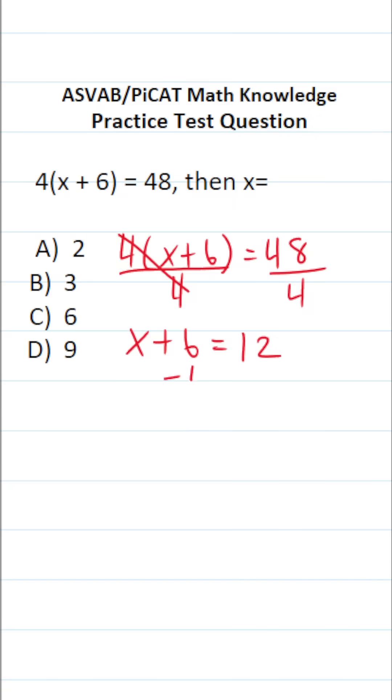All right, so finally to get x by itself, we're going to subtract 6 from both sides. This says x equals 12 minus 6, which is 6. So this one is going to be C.